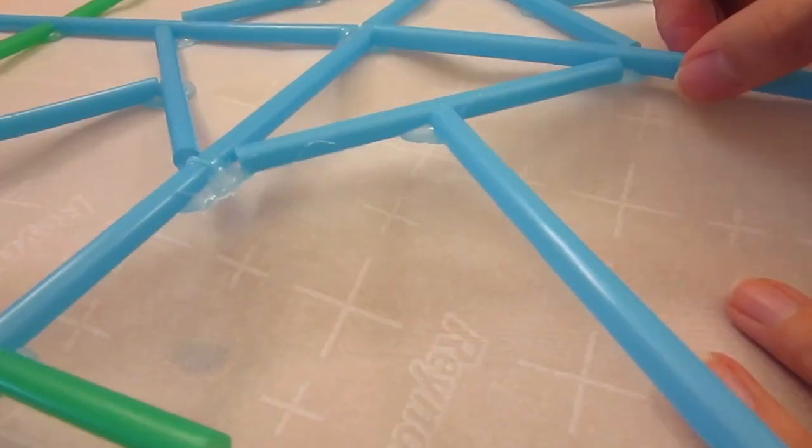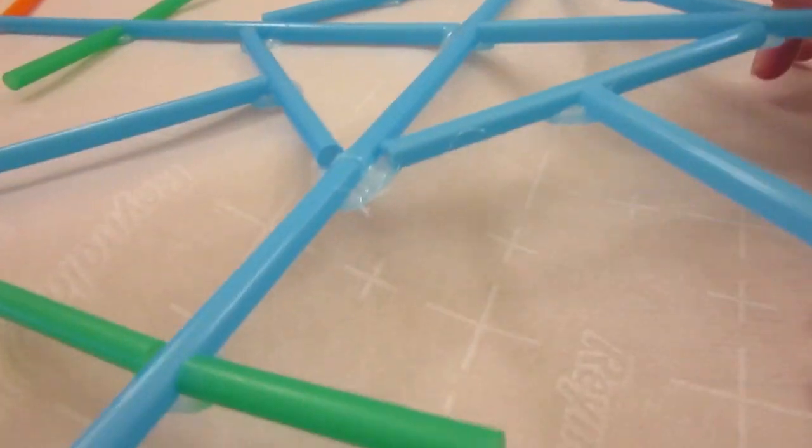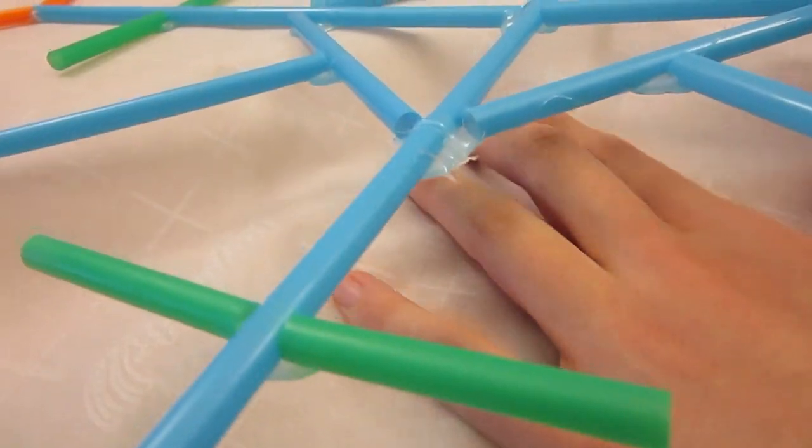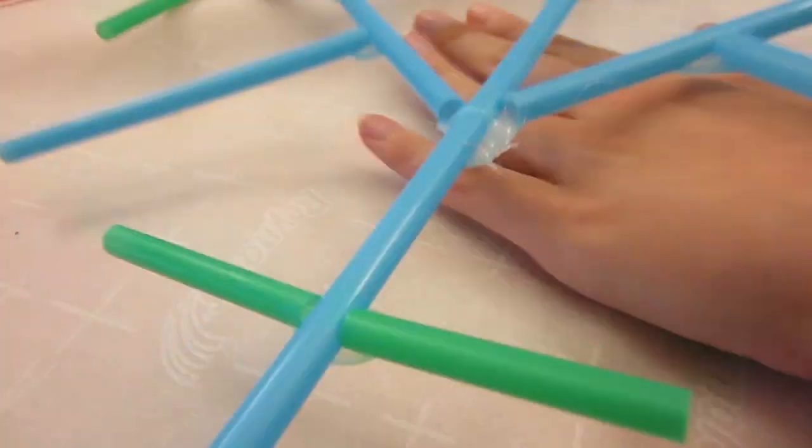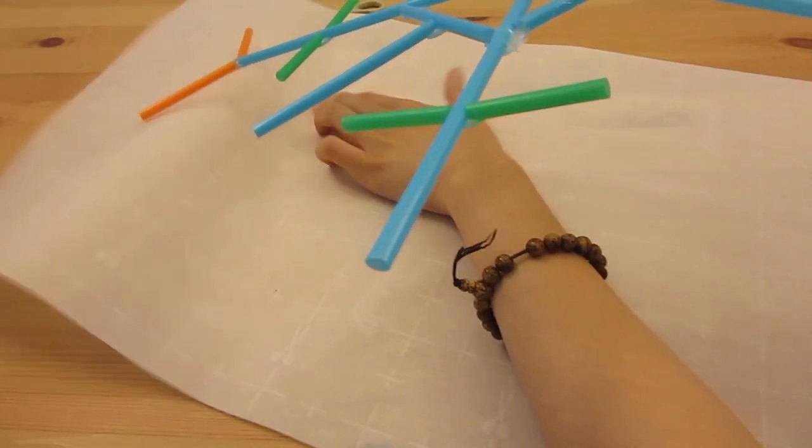Here's the reason why I placed a sheet of parchment paper, because hot glue doesn't stick to it. And you can easily lift up the straws once the hot glue dries.